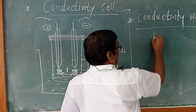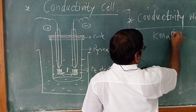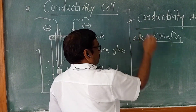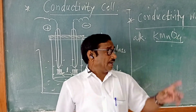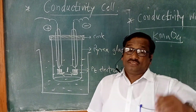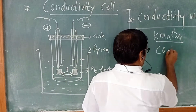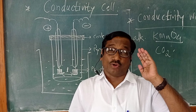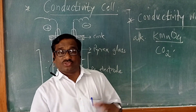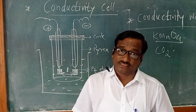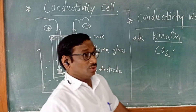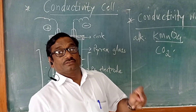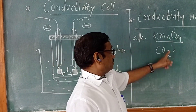The distilled water is redistilled by adding alkaline KMnO₄. Why? Because in distilled water, if carbon dioxide (CO₂) is present, it forms carbonic acid. That carbonic acid dissociates into H⁺ and HCO₃⁻ ions, which induce unwanted conductance. So distilled water is redistilled by adding alkaline KMnO₄, which causes the CO₂ to be expelled.